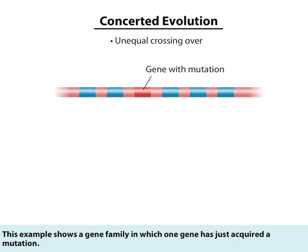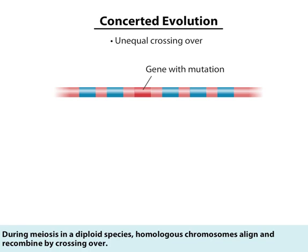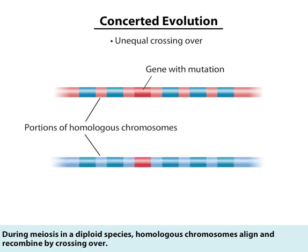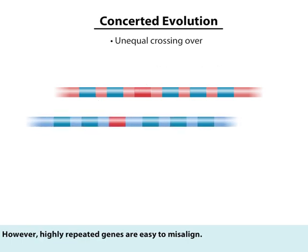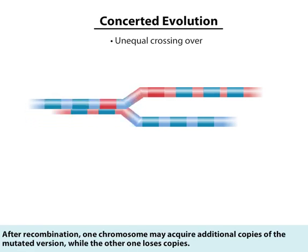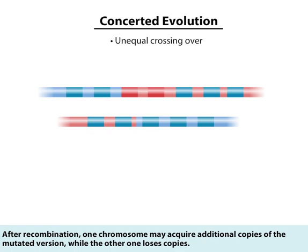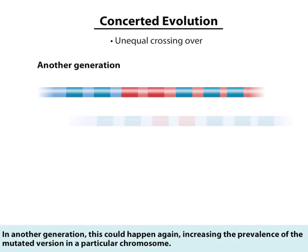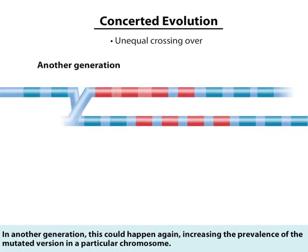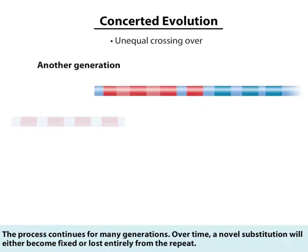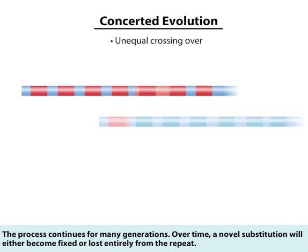This example shows a gene family in which one gene has just acquired a mutation. During meiosis in a diploid species, homologous chromosomes align and recombine by crossing over. However, highly repeated genes are easy to misalign. After recombination, one chromosome may acquire additional copies of the mutated version, while the other one loses copies. In another generation, this could happen again, increasing the prevalence of the mutated version in a particular chromosome. The process continues for many generations, and over time a novel substitution will either become fixed or lost entirely from the repeat.